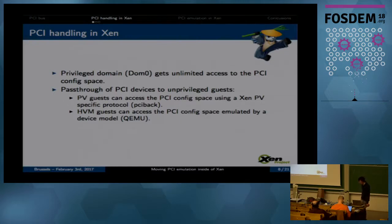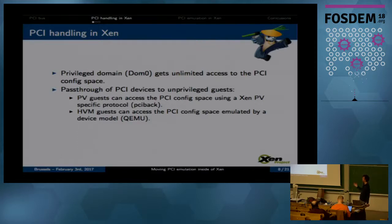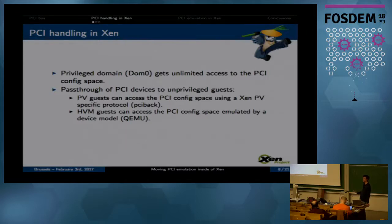So how does PCI handling actually work inside of Xen? For those familiar with Xen, basically in Xen you have a privileged domain - usually Dom0 - it's the first guest that's started after launching the hypervisor kernel. Dom0 has special abilities over the hardware and over Xen, and it's basically used to control Xen. Dom0 has full access to the PCI configuration space because it owns all the hardware underneath. Xen only traps accesses to CF8 and CFC in order to maintain compatibility with accesses from Dom0.